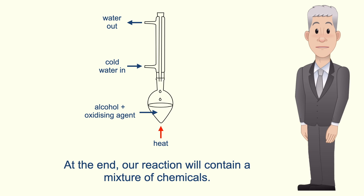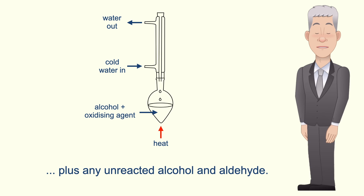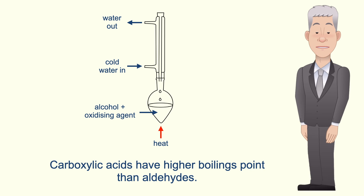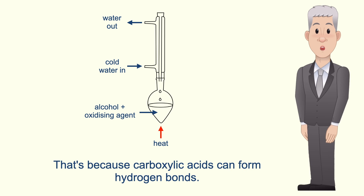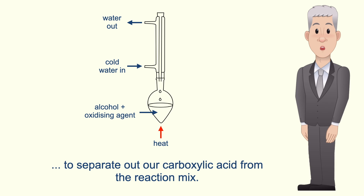At the end, our reaction will contain a mixture of chemicals: our product which is a carboxylic acid, plus any unreacted alcohol and aldehyde, as well as unreacted oxidizing agent. Now carboxylic acids have higher boiling points than aldehydes because carboxylic acids can form hydrogen bonds. So at the end of the reaction we can use distillation to separate out our carboxylic acid from the reaction mix.